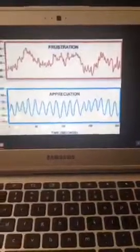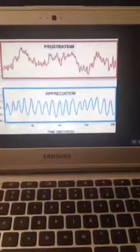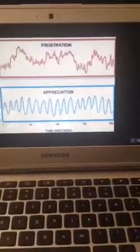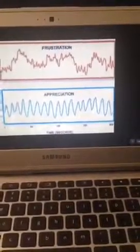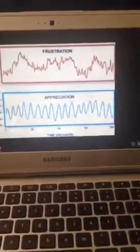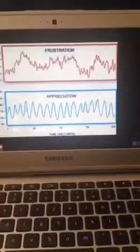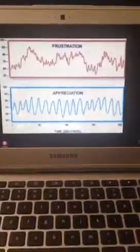The heart communicates with the brain in four ways. One is neurologically through the nerve impulses and neurons. The second is biochemically through your hormones. The third is biophysically through pressure waves. And the fourth is energetically through your electromagnetic waves.